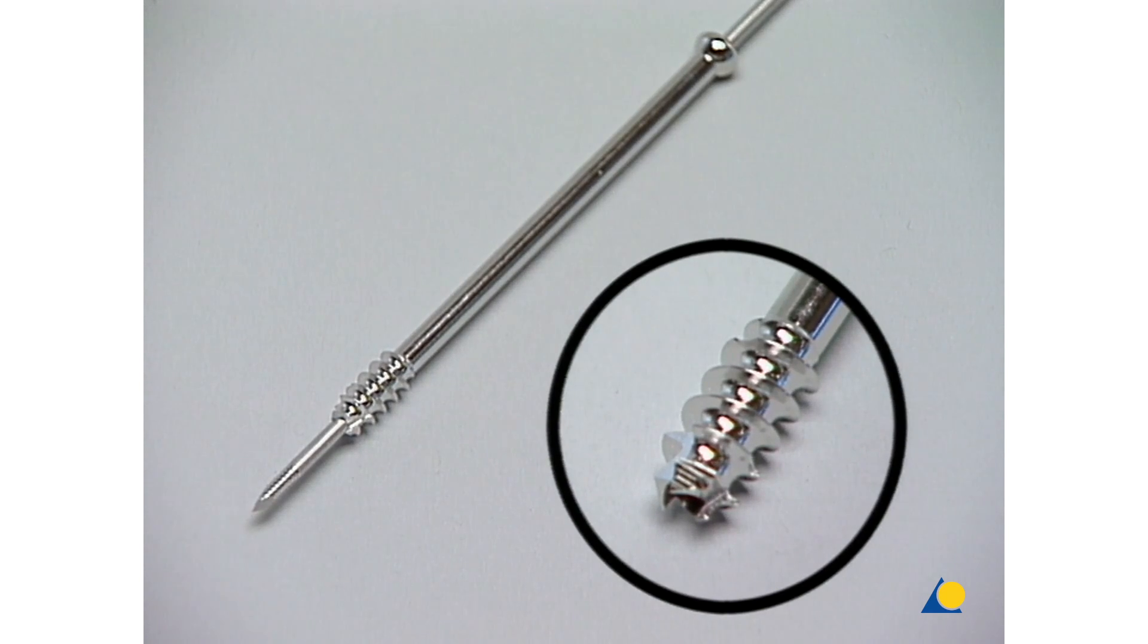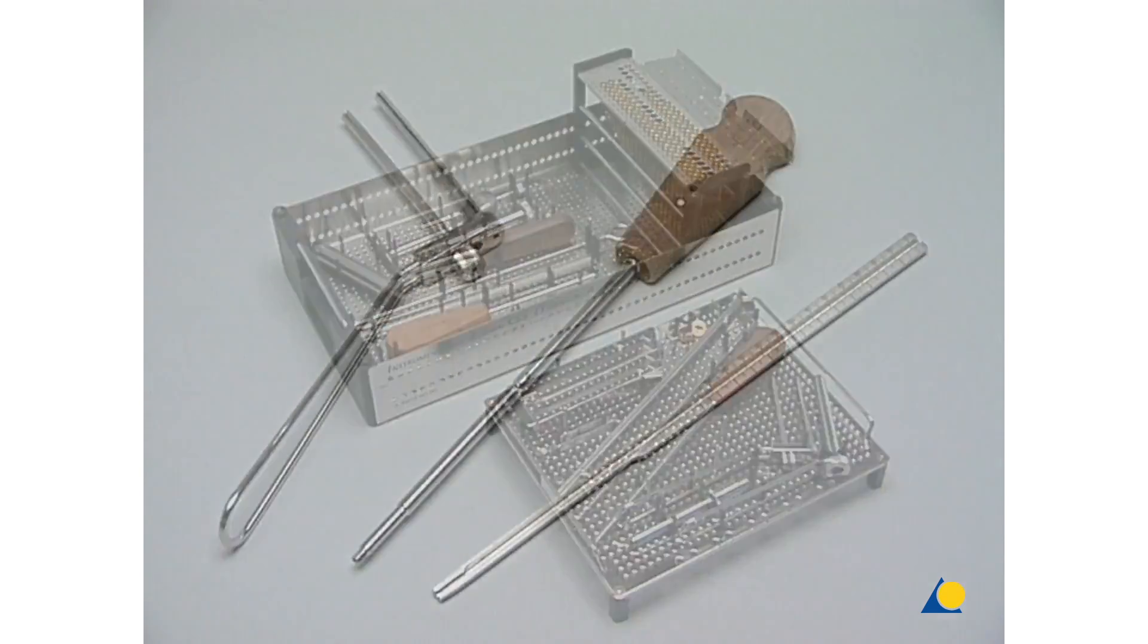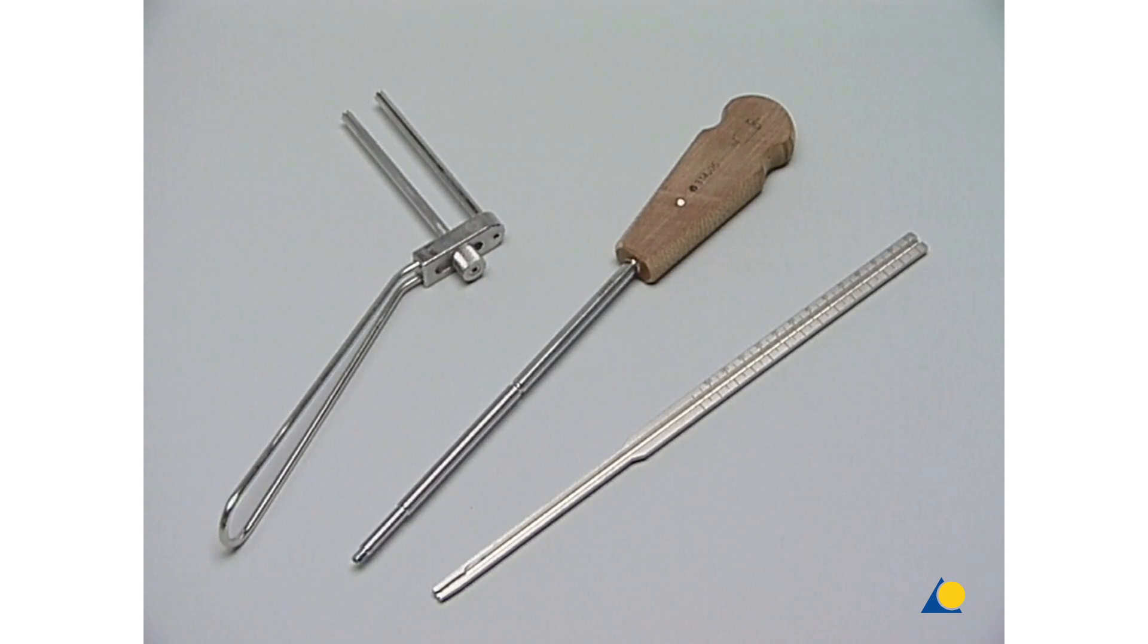Instruments and implants are stored in a special tray. For our exercise, we basically need only these three instruments: a parallel wire guide where one sleeve is adjustable, a cannulated screwdriver, and the direct measuring device for wires from 2 to 2.8 millimeters.